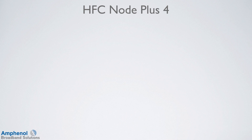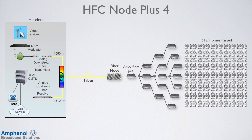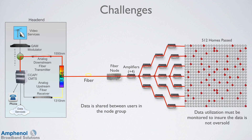Cable TV has done a great job of providing high-speed data services by continually upgrading their systems, such as with the HFC network. Here I'm showing a Node Plus 4 amplifier architecture, which is fed from a traditional head-end with analog fiber to the node. This type of architecture typically services around 500 homes passed. Even with this architecture, there are some challenges — the data fed from the head-end for this fiber node is shared between all the homes in the node group. The data utilization must be closely monitored to ensure that the data is not oversold, especially if very high data speed rates are supported.